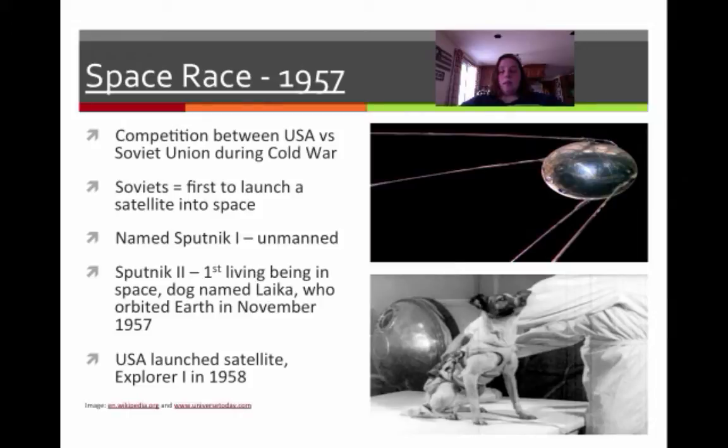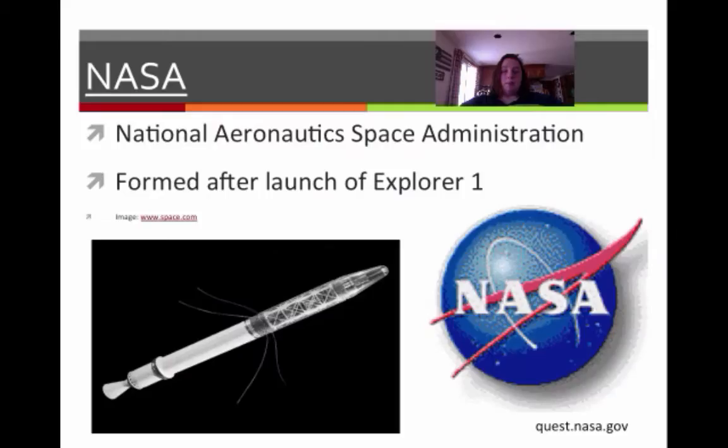Sputnik 2 had the first living being on it. It was a dog, and I've got a picture of her for you. She orbited the Earth in November 1957. There's actually a big monument to her. And then the United States launched what was called Explorer 1 in 1958. When Explorer 1 was launched, we then formed NASA, or the National Aeronautics Space Administration. Before that, NASA didn't exist because we had never even traveled to space.